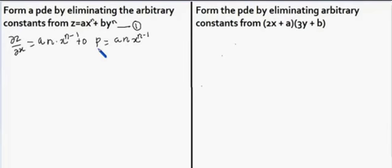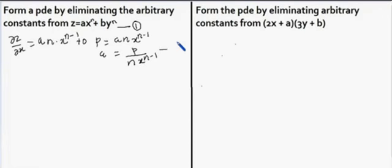From this, we can find out a value for a, because we are going to eliminate a and b. So a is equal to p divided by n·x^(n-1). Let this be equation number 2.